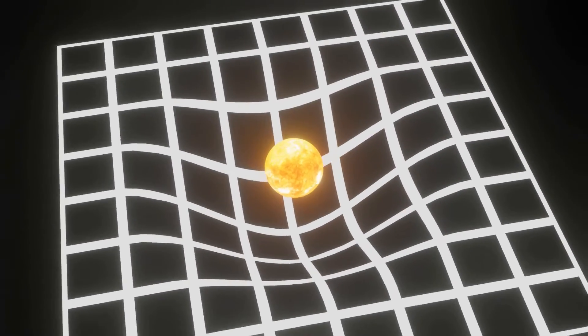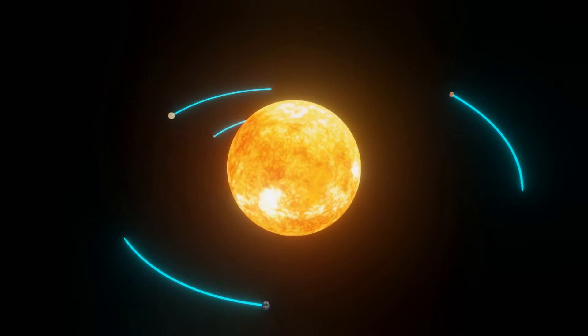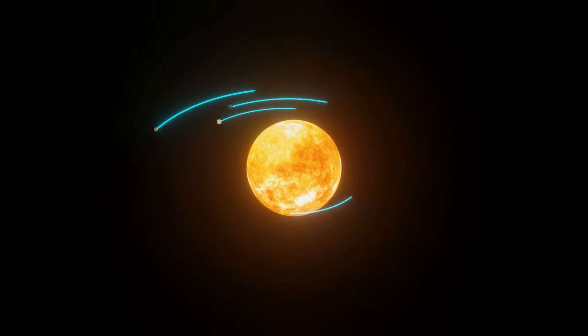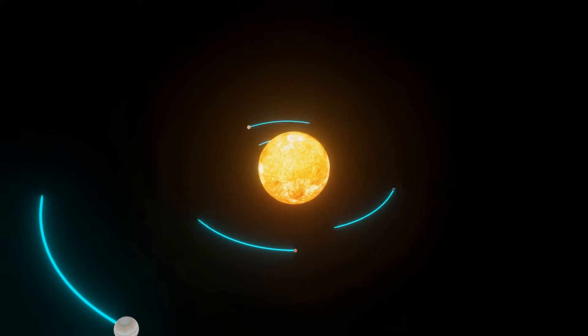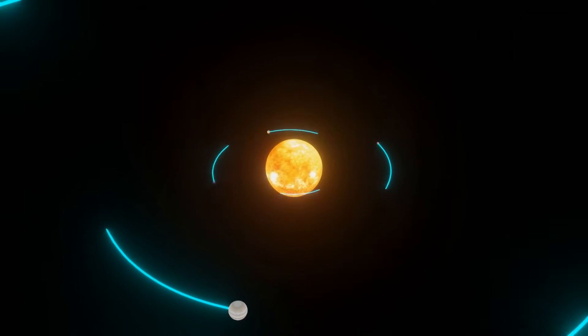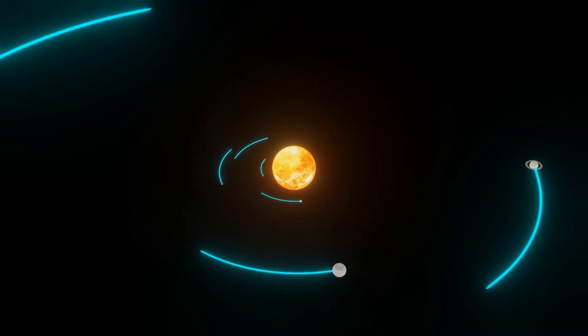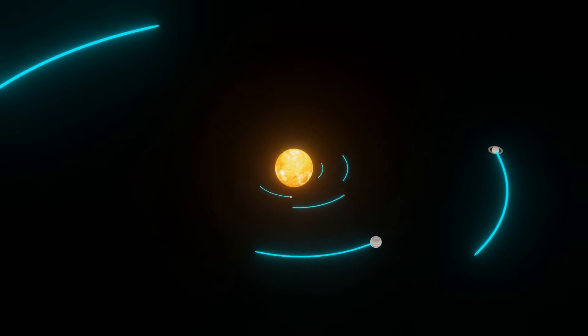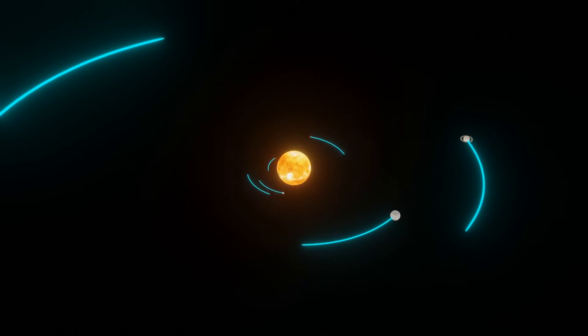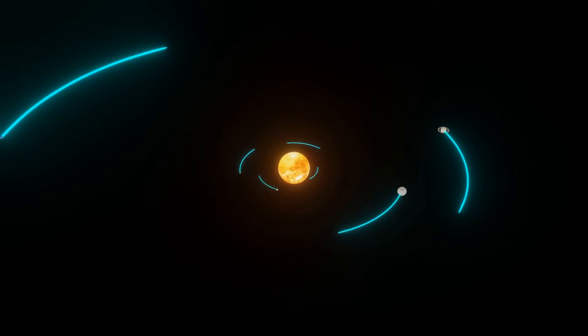Warping the fabric of space also warps time. That's why we call it spacetime. First, you need to understand that time shifts in a similar way to the speed of light. Now, light moves at a constant speed, but as we learned before, the spacetime that it moves on can be distorted. Therefore, time can be warped.